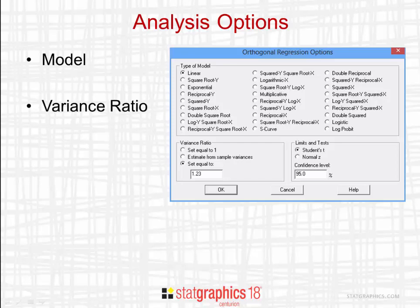In many cases, the variance ratio will be set based upon some external study, perhaps a gauge repeatability and reproducibility study.